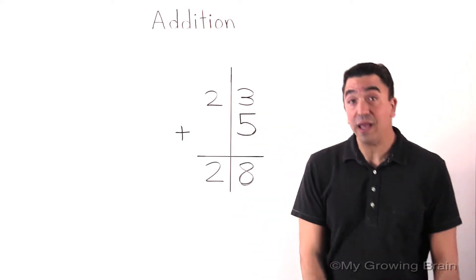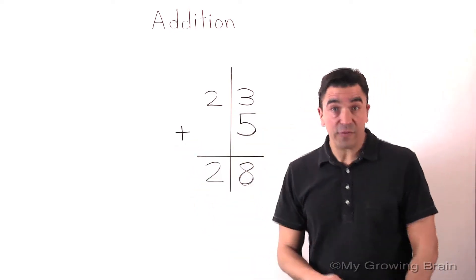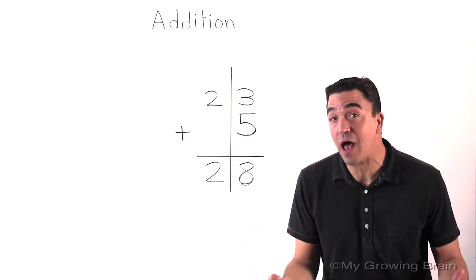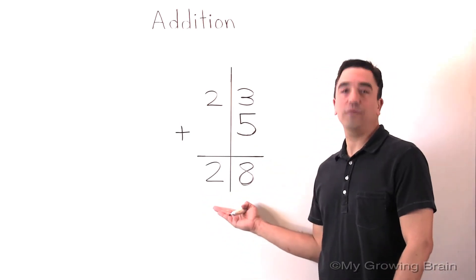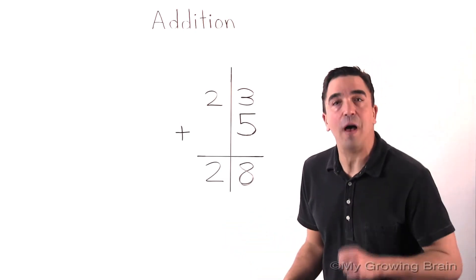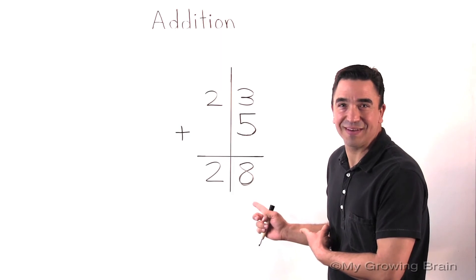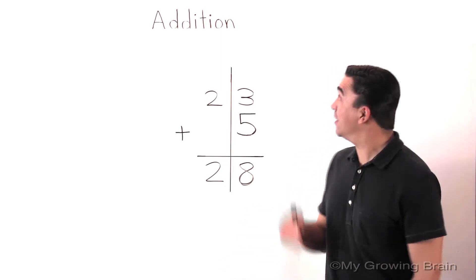So, 23 plus 5 gives us a sum of 28. And don't forget, the sum is the answer to an addition problem. And that concludes our lesson on addition.